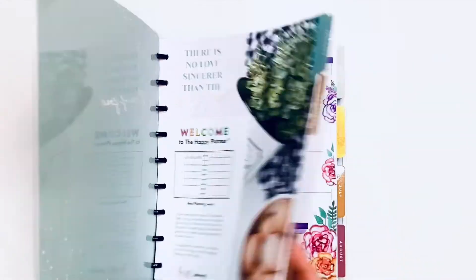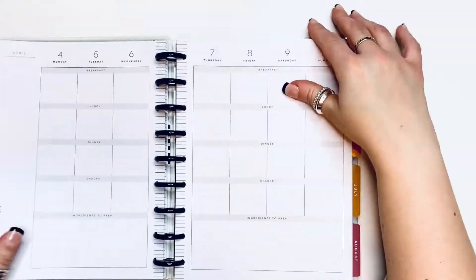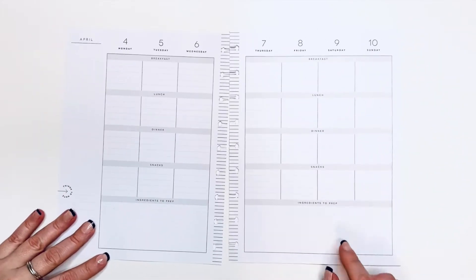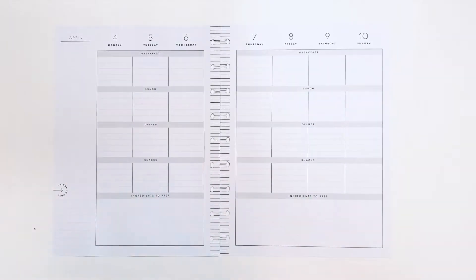Hello my loves, it's Kasha Planarista 101. Today we are going to be planning in my meal planner for the first week of April. I am super excited about this, so April 4th through the 10th.